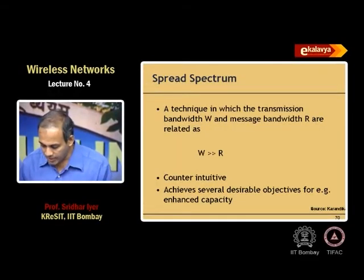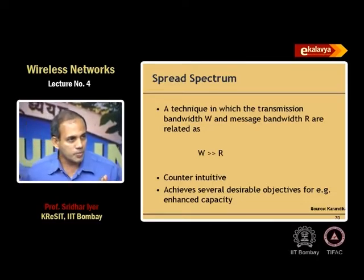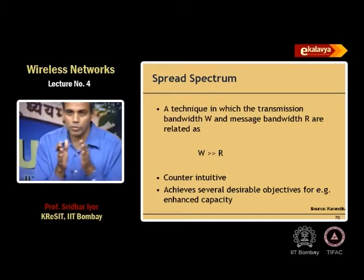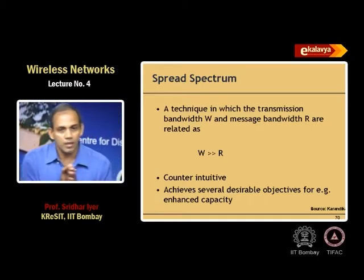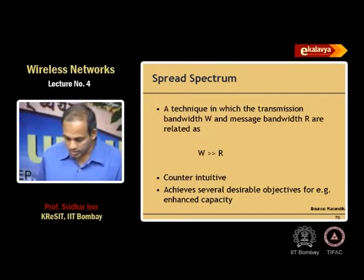The technique is basically that the bandwidth W and the message bandwidth R are related as W is far greater than R. Typically we want to take a message and transmit it in as short a bandwidth as possible. But in CDMA it is counter-intuitive — instead of packing the message into smaller bandwidth, you spread it out over a larger spectrum. It turns out this achieves enhanced capacity and interference tolerance.